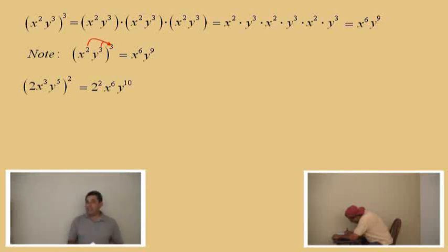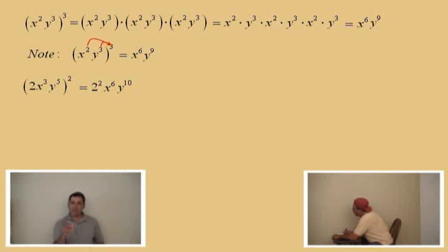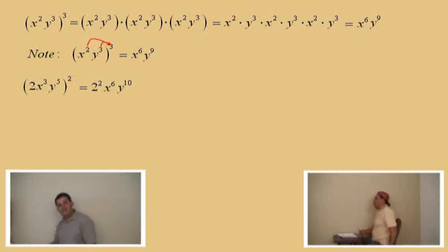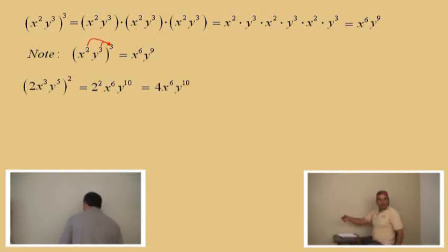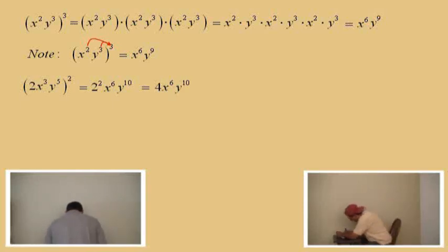We can write our answer as two squared times x to the sixth times y to the tenth. But you should know what two squared means — two times two — and Charlie, what's two times two? Four. So that's a four for our final answer: four x to the sixth, y to the tenth.